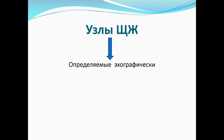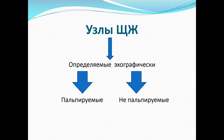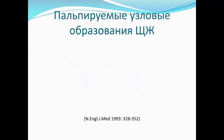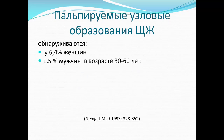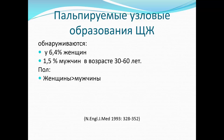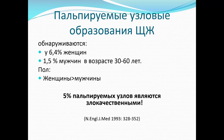Узлы щитовидной железы, определяемые эхографически, могут быть как пальпируемыми, так и не пальпируемыми. Среди пальпируемых образований они обнаруживаются примерно у 6% женщин и 1,5% мужчин в возрасте 30–60 лет, и не менее 5% пальпируемых узлов являются злокачественными — это данные из издания 1993 года.